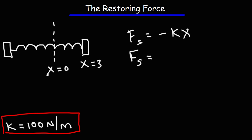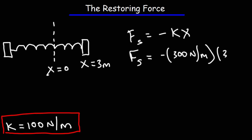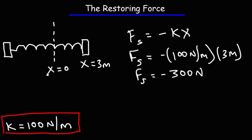So in this example, k is 100 newtons per meter and x is 3 meters. So 100 times 3 gives us 300, and we have a force of negative 300. We can see that the units — meters — cancel.